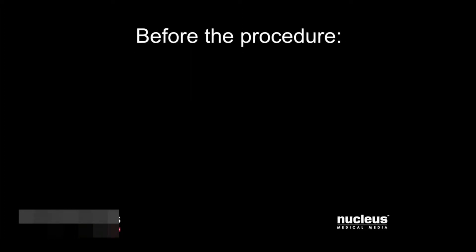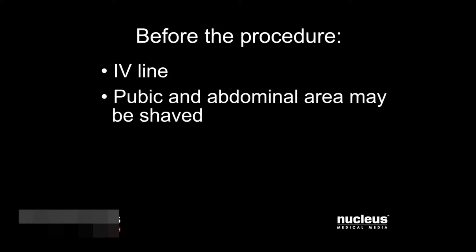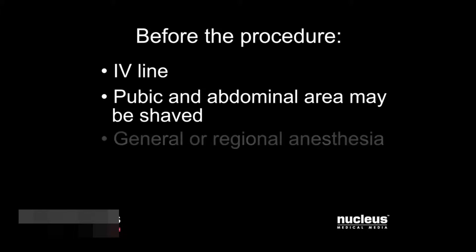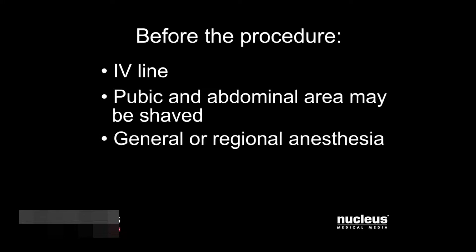When you arrive at the hospital for your surgery, an intravenous line will be started. If you are having an abdominal hysterectomy, your pubic and abdominal area may be shaved. Hysterectomies may be done under general or regional anesthesia.